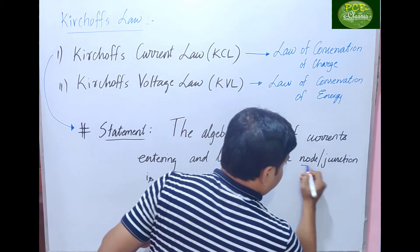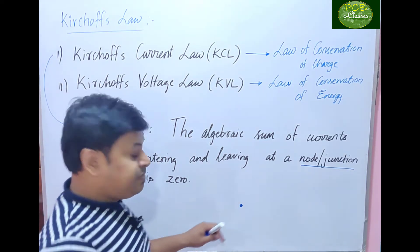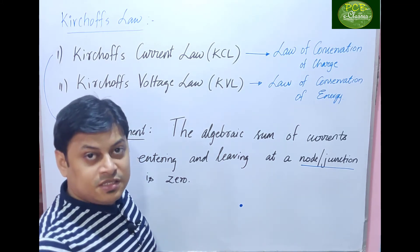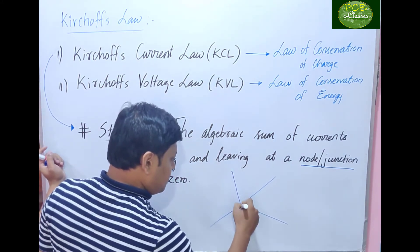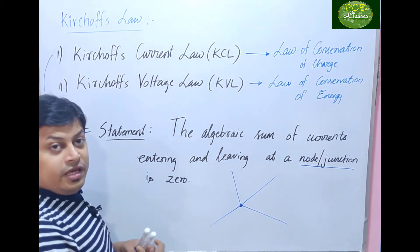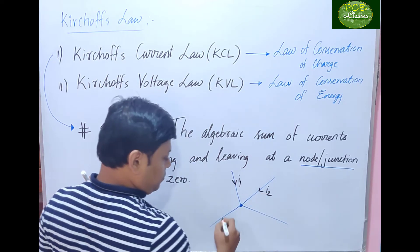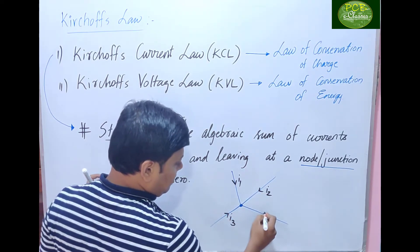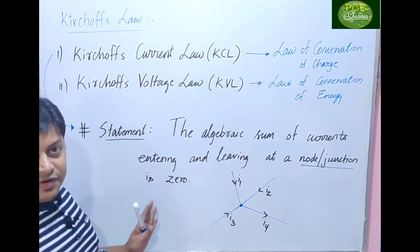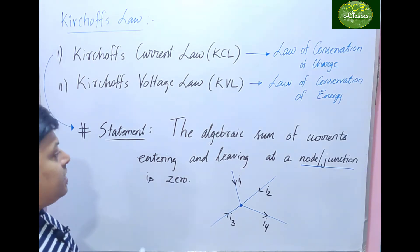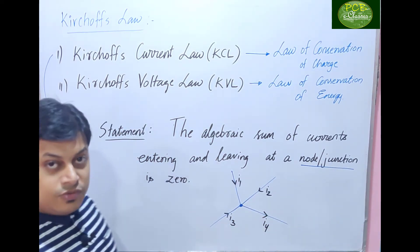Let's take a node or junction as an example. A node is a common point for two or more branches. Suppose four branches are linked at this node, with currents I1, I2, I3, and I4 flowing through them. The algebraic sum of currents entering and leaving at this junction is zero.